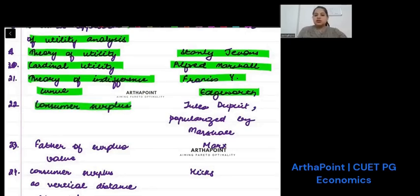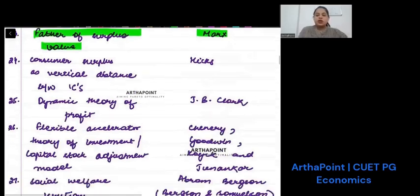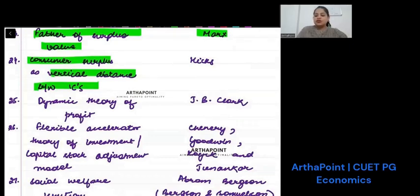Consumer surplus was given by Jules Dupuit, but it was more popularized by Marshall. So in MCQs, you will find Marshall. Father of surplus value was Marx. Consumer surplus as vertical distance between indifference curves was given by Hicks. Dynamic theory of profit was given by J.B. Clark.